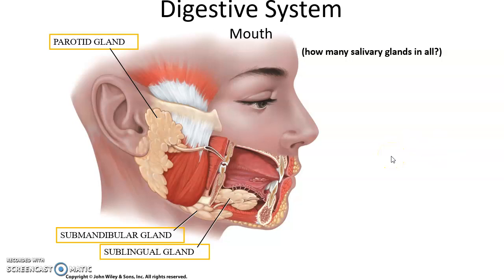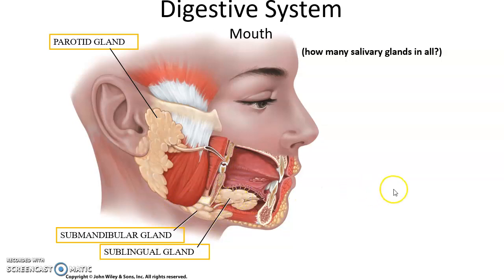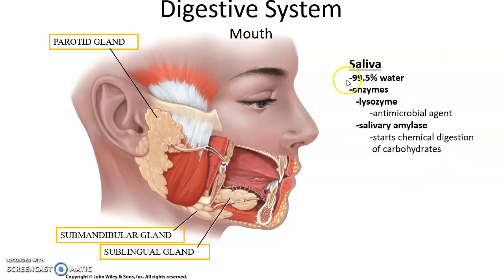We have three pairs of salivary glands. We have the parotid glands, found just in front of the ears; the submandibular glands underneath the mandible; and the sublingual glands underneath the tongue. All six of these salivary glands produce saliva. Saliva is primarily water — about 99.5% water. It has some electrolytes and also some enzymes.